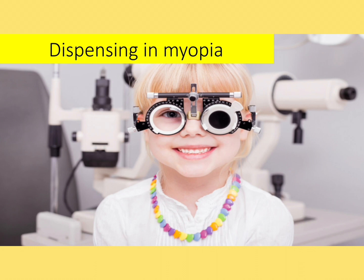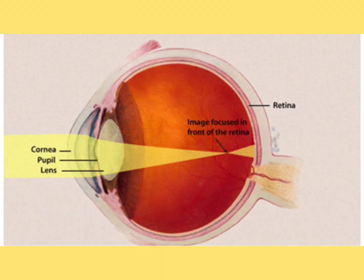Myopia is that type of refractive error where parallel rays of light coming from infinity, after getting refracted by the cornea and lens, get focused in front of the retina instead of on it. That's why the patient has difficulty seeing distant objects clearly, but can see near objects clearly. In myopia, accommodation has no role — if you activate accommodation as a myopic patient, you will see more blurrily.